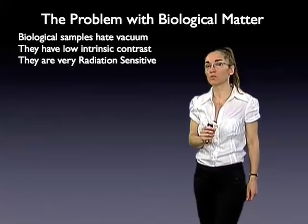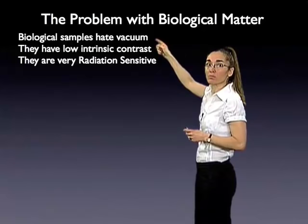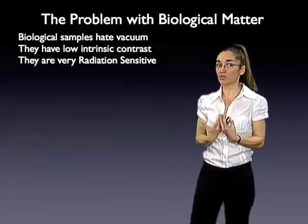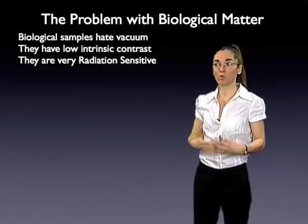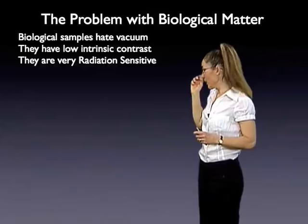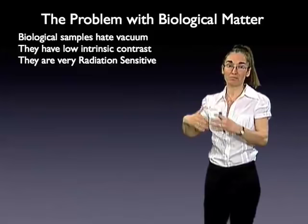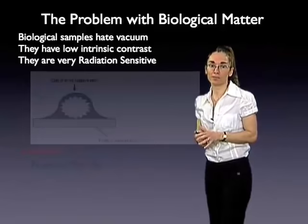Let me review what the problems are that are unique to biological organic samples. First of all, all biological material lives in aqueous solution, and by definition they hate the high vacuum in the column of the electron microscope. The other thing is that the atoms biological materials are made of — nitrogen, carbon, oxygen — have basically the same scattering power as the water surrounding them, so they have very low intrinsic contrast. And most importantly, they are very radiation sensitive: when inelastic scattering occurs, the sample gets ionized, generating radicals that move around the sample and break all the bonds, basically making the whole thing explode.